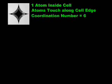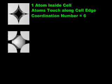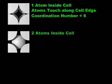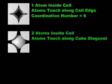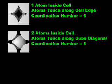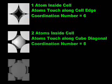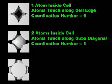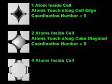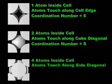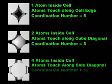Let's take a moment to review. The unit cell for the simple cubic structure contains the equivalent of one atom inside the cell; the atoms touch along an edge of the cell, and the coordination number is 6. The unit cell for the body-centered cubic structure contains the equivalent of two atoms inside the cell; the atoms touch along the cube diagonal of the cell, and the coordination number is 8. The unit cell for the face-centered cubic structure contains the equivalent of four atoms inside the cell; the atoms touch along the side diagonal of the cell, and the coordination number is 12.